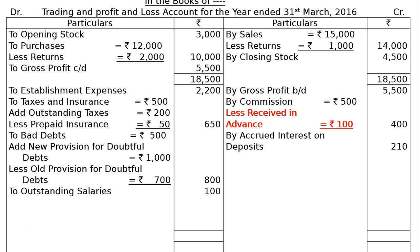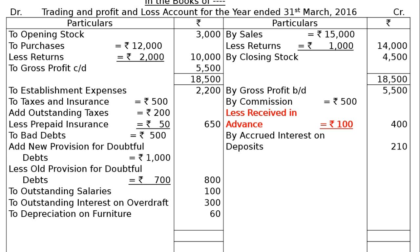Next, outstanding salary is Rs 100. There are no salaries in the trial balance, but it is given in the adjustments as outstanding salary Rs 100. This will be shown under current liabilities in the liabilities side of the balance sheet. Next, outstanding interest on bank overdraft Rs 300 is to be paid — this will also be shown under current liabilities. Next is depreciation on furniture: furniture value is Rs 600, and 10% of this is Rs 60. Depreciation on furniture is Rs 60.